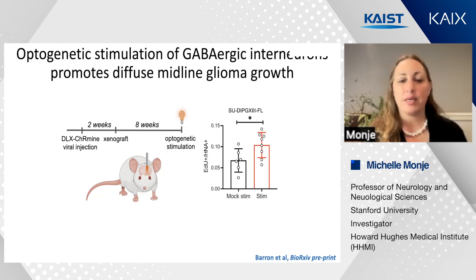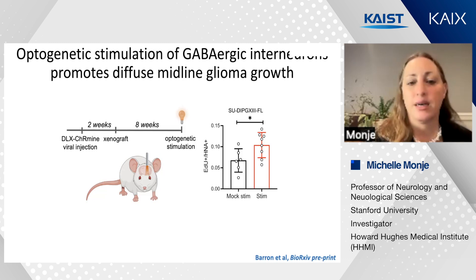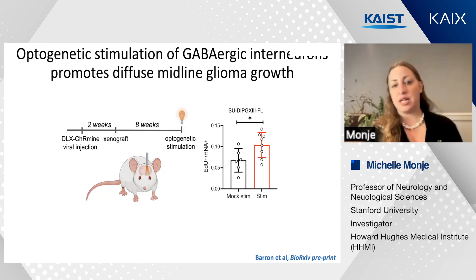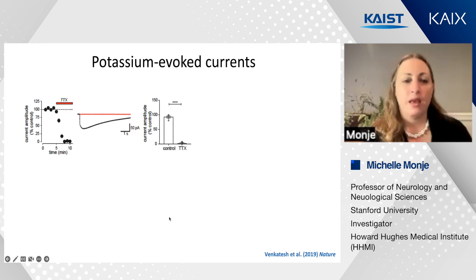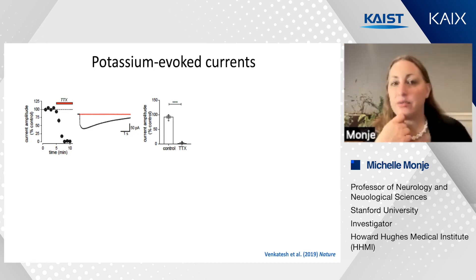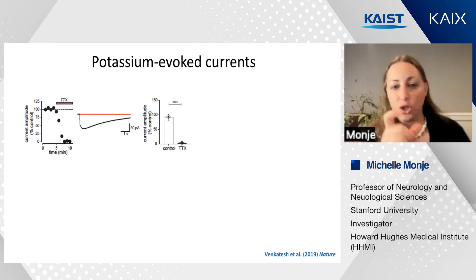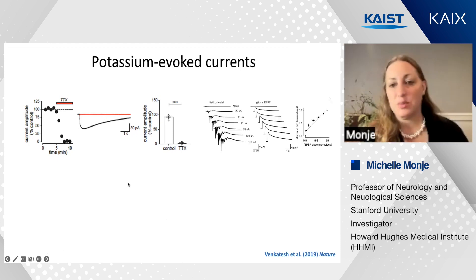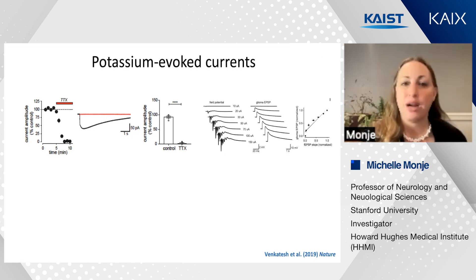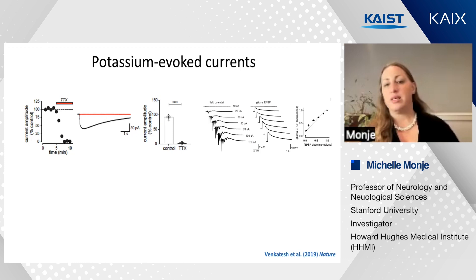We find that if we optogenetically stimulate interneuronal activity, that drives the proliferation rate of the tumor cells. There is also a third kind of current in these tumor cells that is not synaptic in nature—it is much longer in duration and scales with field potential. The more neurons in the tumor microenvironment are active, the larger and longer these currents are. We determined that these currents represent more astrocyte-like, activity-dependent potassium-evoked currents, which can be elicited by potassium alone and can be blocked with barium, which blocks potassium channels.